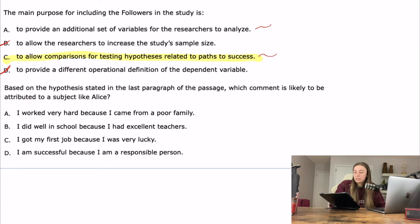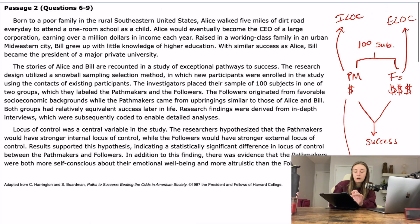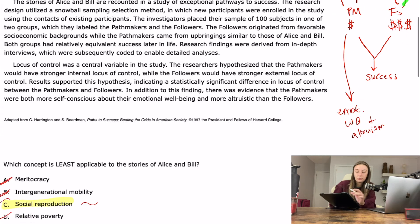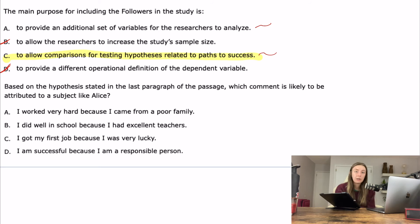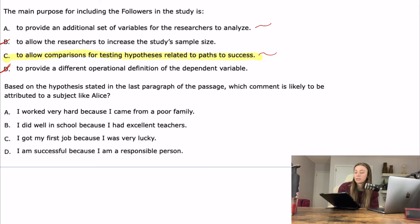Next question: based on the hypothesis stated in the last paragraph, which comment is likely to be attributed to a subject like Alice? Alice is a path maker, so this question is essentially asking: which comment reflects an internal locus of control? Internal locus of control is when you feel the outcomes in your life depend on what you do. External locus of control is when outcomes depend on other people or outside forces.